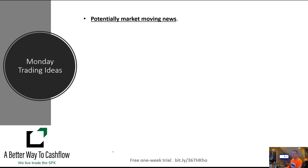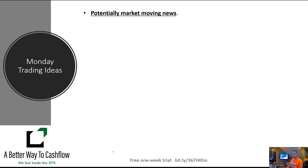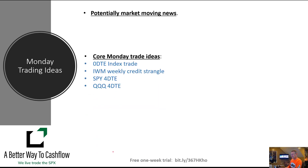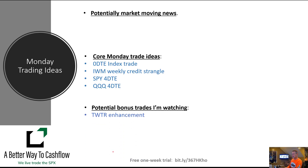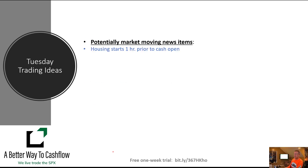For Monday's trading ideas, we don't have a lot of potentially market-moving news coming out. Monday is always very busy — we've got our zero DTE index trade kicking off as always, we need to reinitiate our IWM weekly credit strangle trade, as well as our 4-DTE trades on both the SPY and the QQQ. A potential bonus trade Monday is an enhancement to our Twitter trade that we initiated last week, just after Elon Musk made his bid for the company. Some developments over the weekend may give us the ability to enhance that trade — we'll discuss it extensively in Monday's Zoom session.